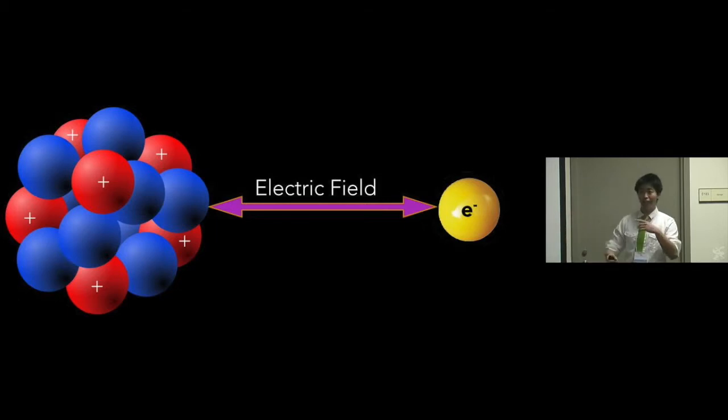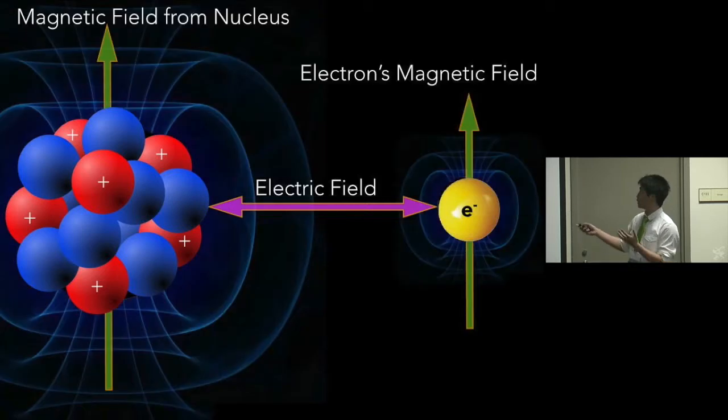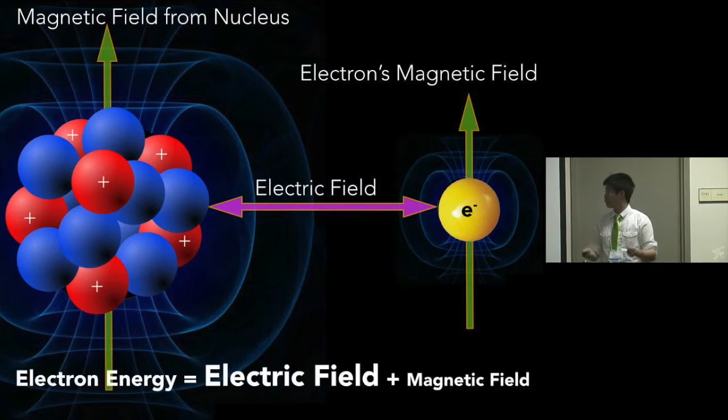The overwhelming force that holds an electron to your nucleus is the electric field. However, the nucleus has a spin, it's spinning around, it creates a magnetic field. And your electron is also spinning, so it also has a magnetic field. And these will pull or push away from each other.